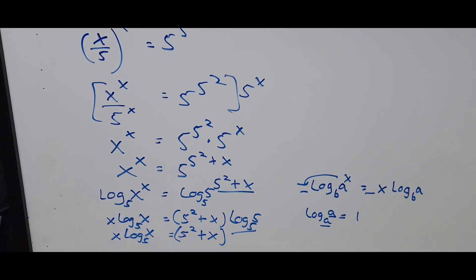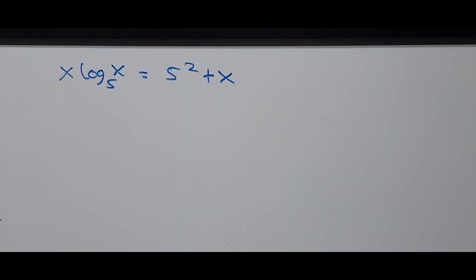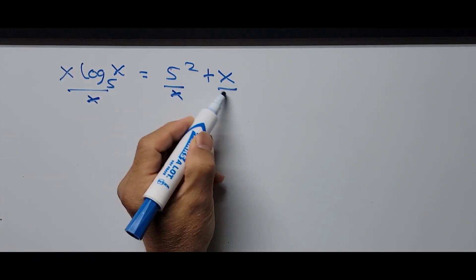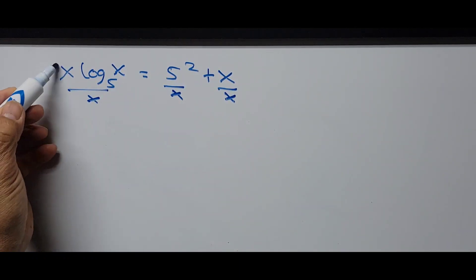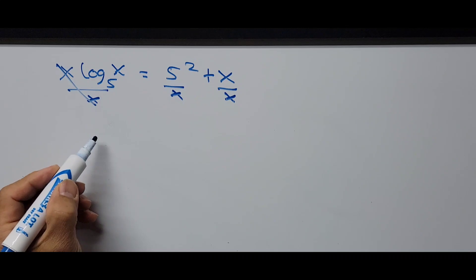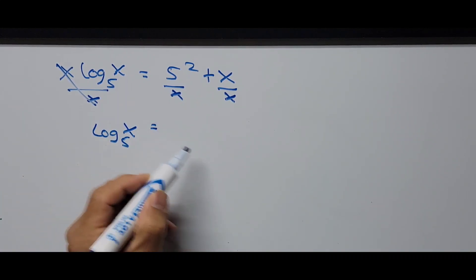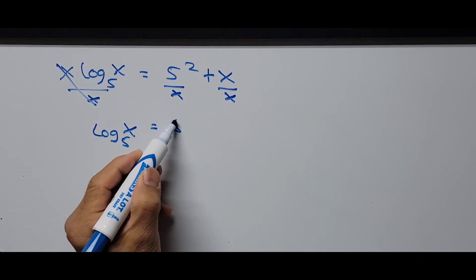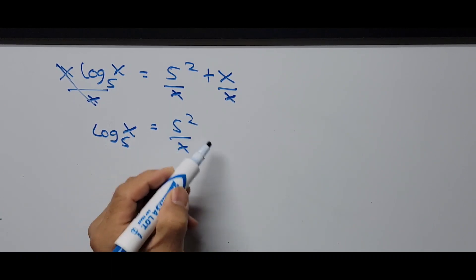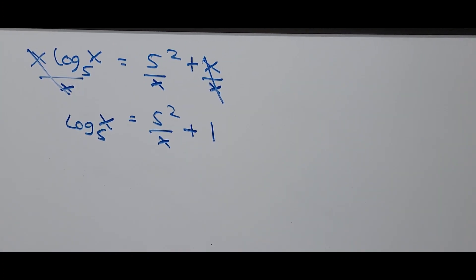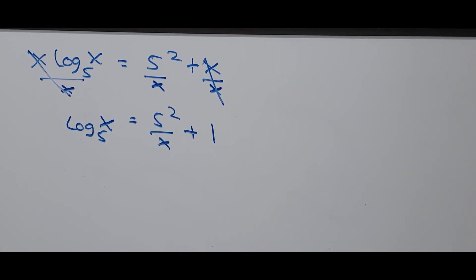From here we divide the whole equation by x. This cancels x on the left side, giving us log of x to base 5 equals 5 squared divided by x plus 1. From here I'm introducing another variable in place of x.